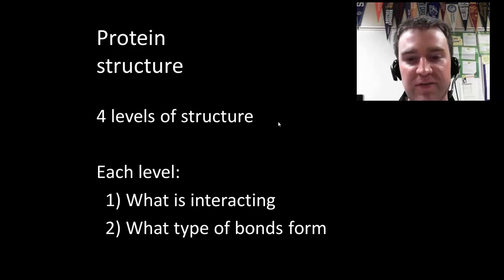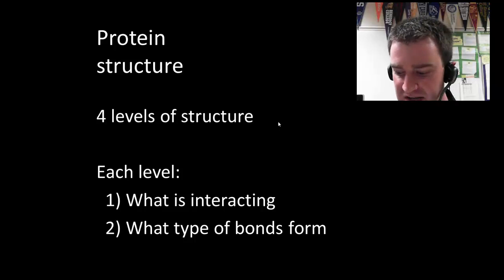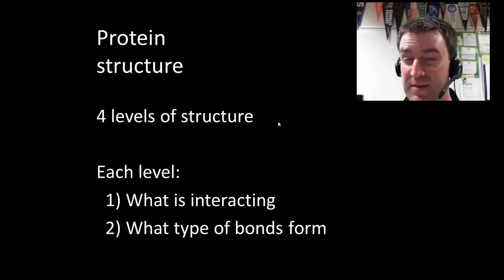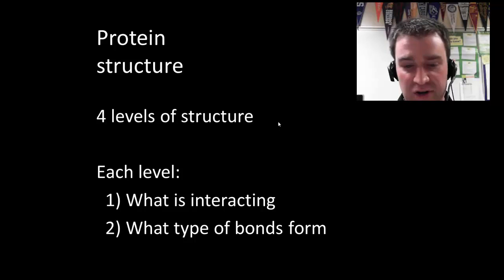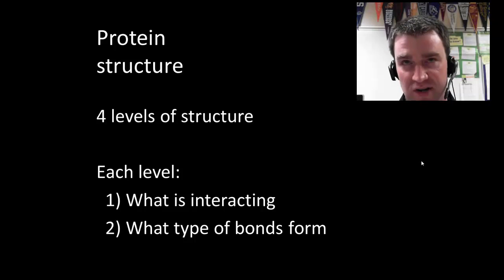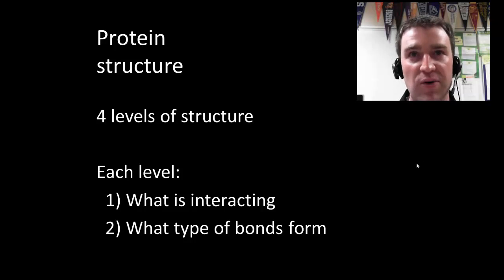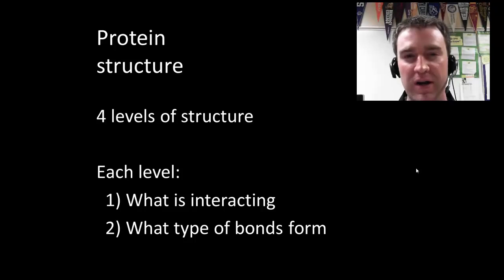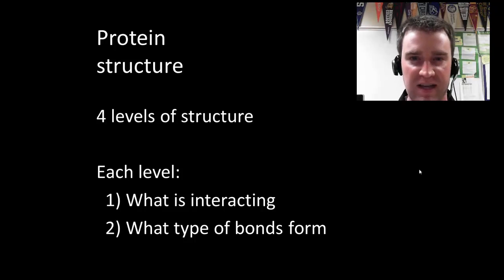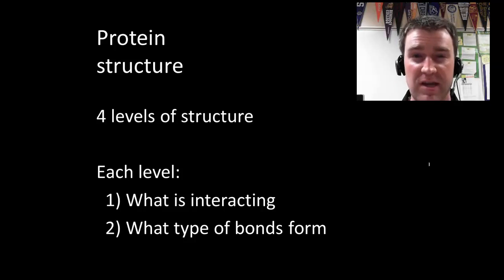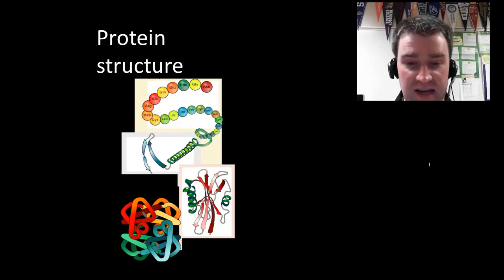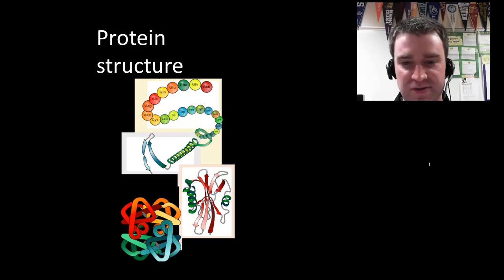We're going to discuss four different levels of protein structure. Your book's way of discussing them is a little vague and confusing, so I want to make it clear. At each level of structure, I want you to be able to tell me what is interacting with each other and what kind of bonds are formed at that level. This diagram is similar to one in your book showing all four levels of structure, and we'll walk through them in order.